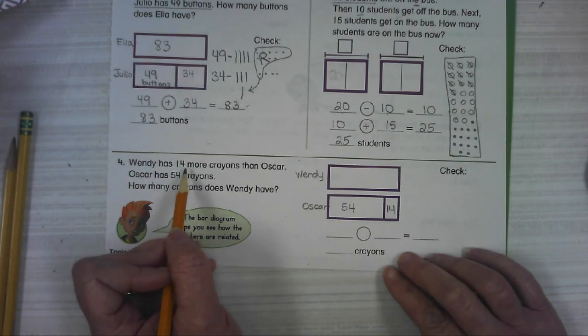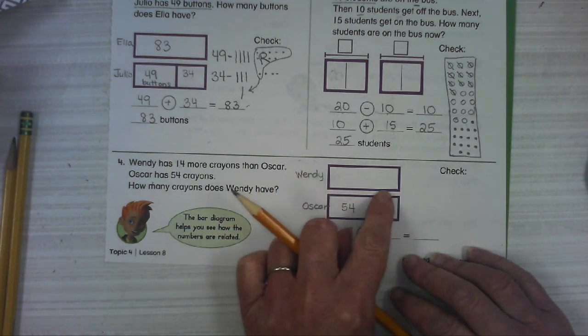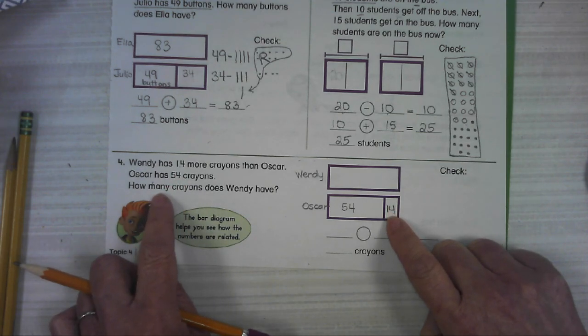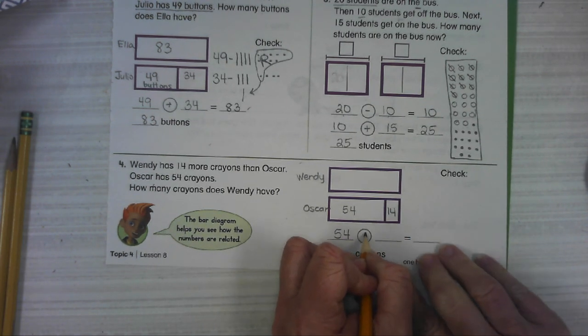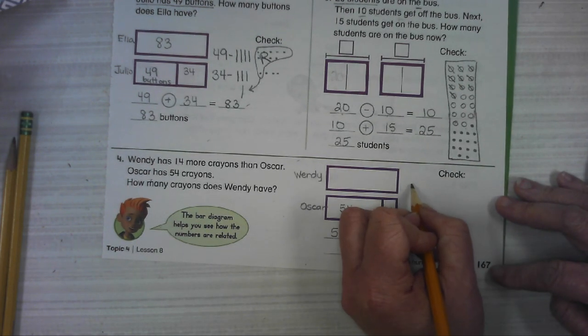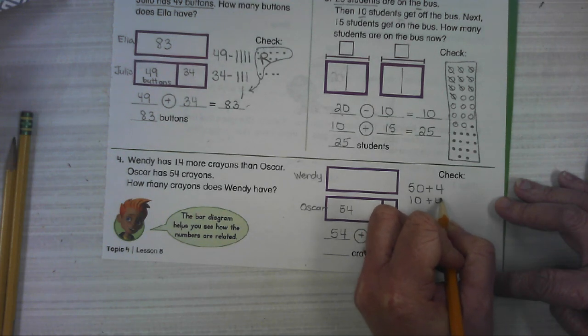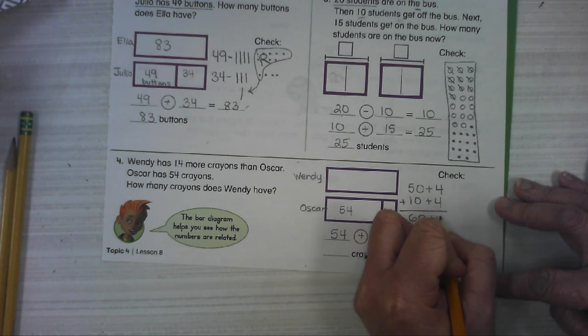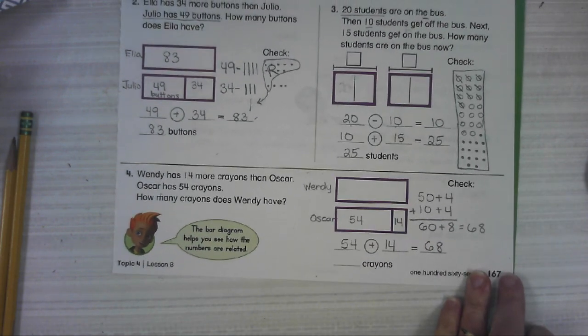All right, number four. Wendy has more crayons than Oscar. That's why we went and filled in Wendy's name here because she's got the big bar. This is Oscar's, and then this is what would make them the same. Oscar has 54 crayons. How many crayons does Wendy have? So we need to add these two together to get how many Wendy had. Okay, 54 plus 14. I'm going to do expanded form for this one. If you want to use base 10 blocks, do it, please. Whatever one works best for you. So 60 plus 8. 68 crayons. All right.